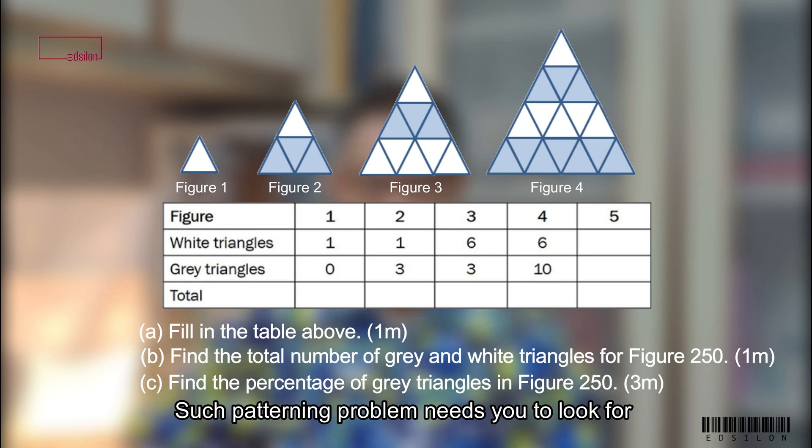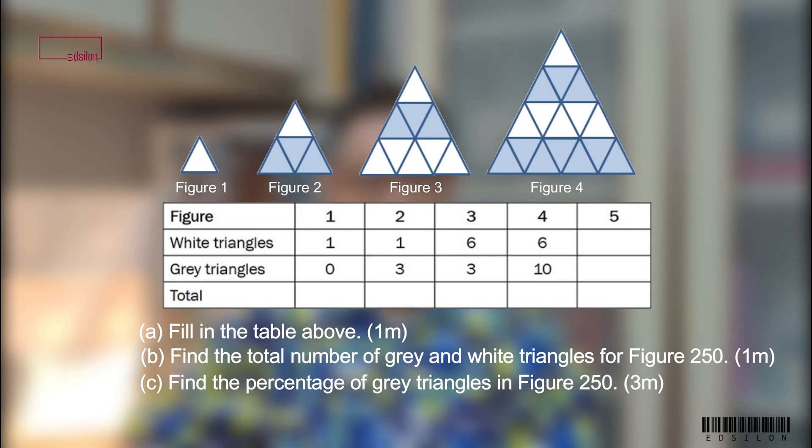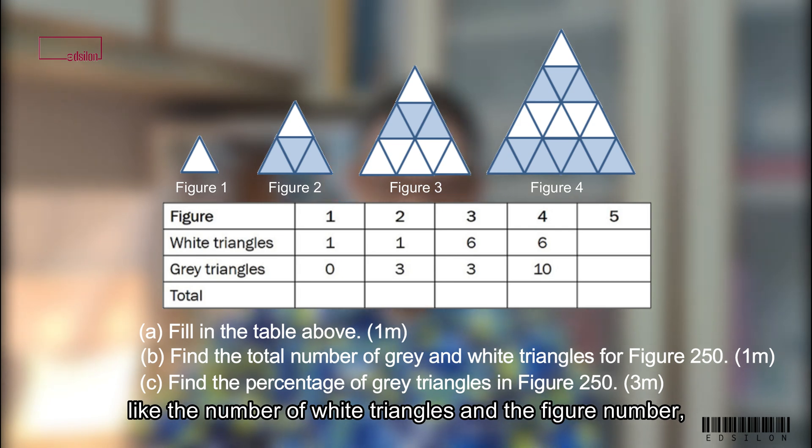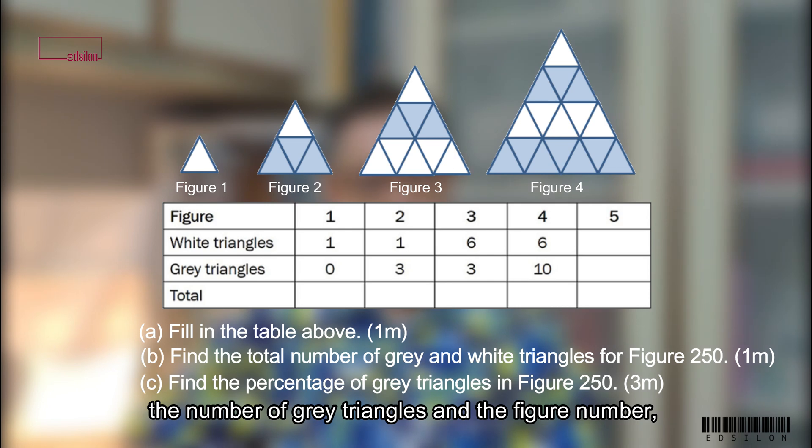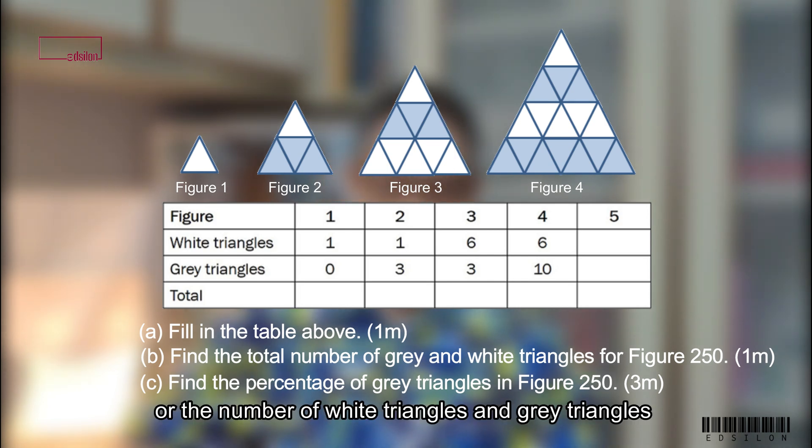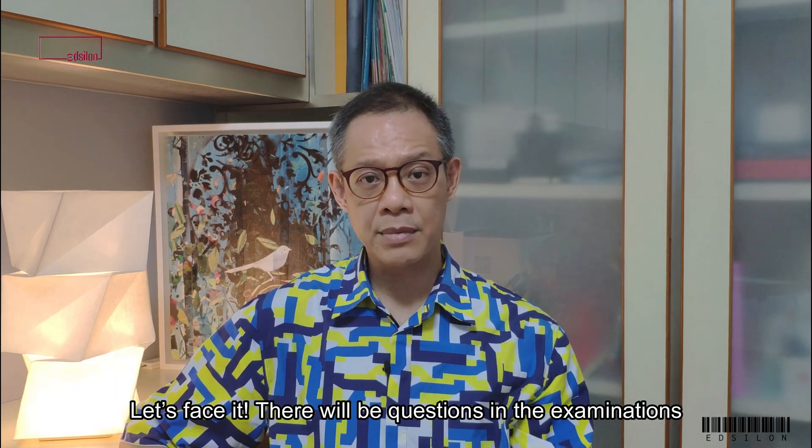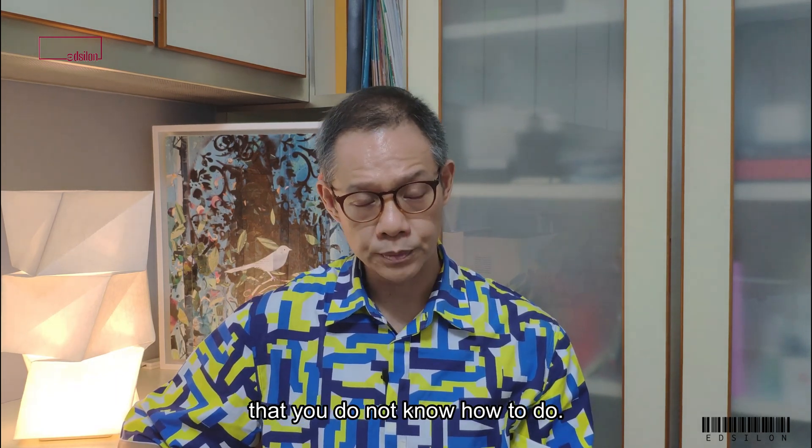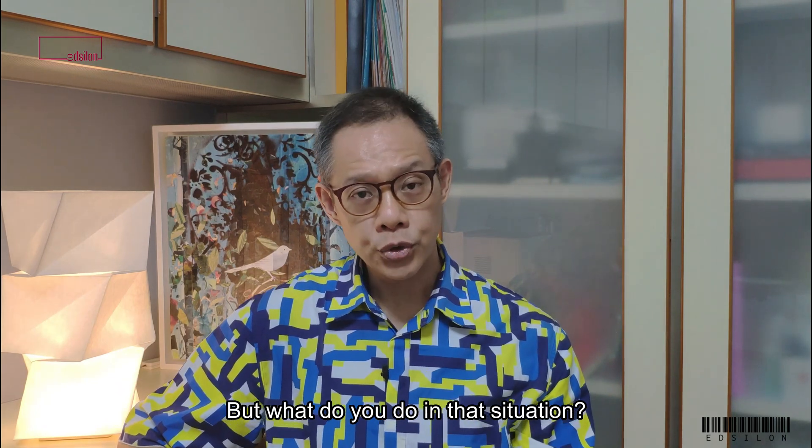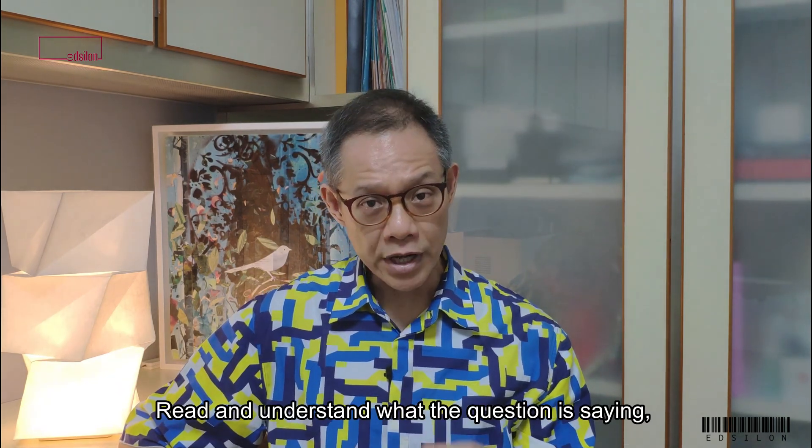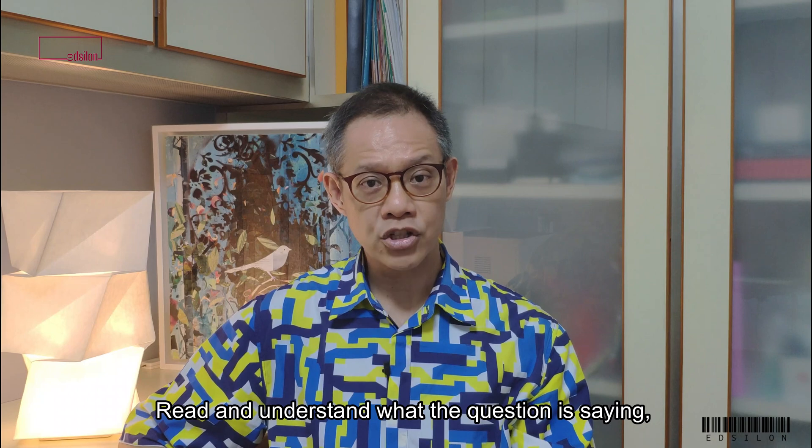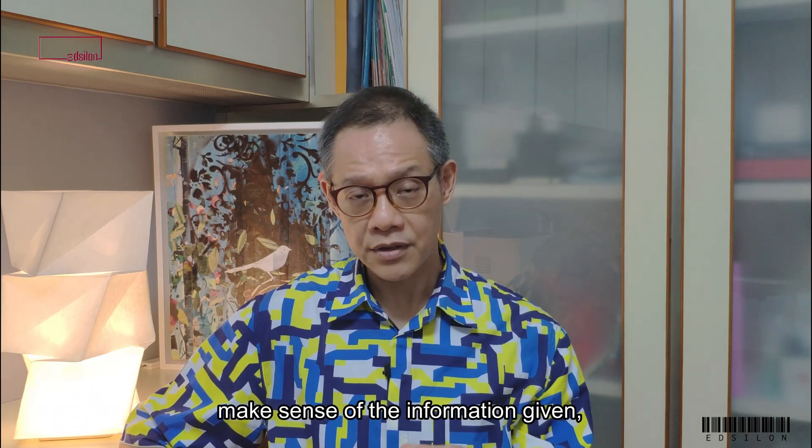Such patterning problem needs you to look for a pattern between two attributes. Like the number of white triangles and the figure number, the number of grey triangles and the figure number, or the number of white triangles and grey triangles. Let's face it, there will be questions in examinations that you do not know how to do. But what do you do in that situation? Read and understand what the question is saying. Make sense of the information given.